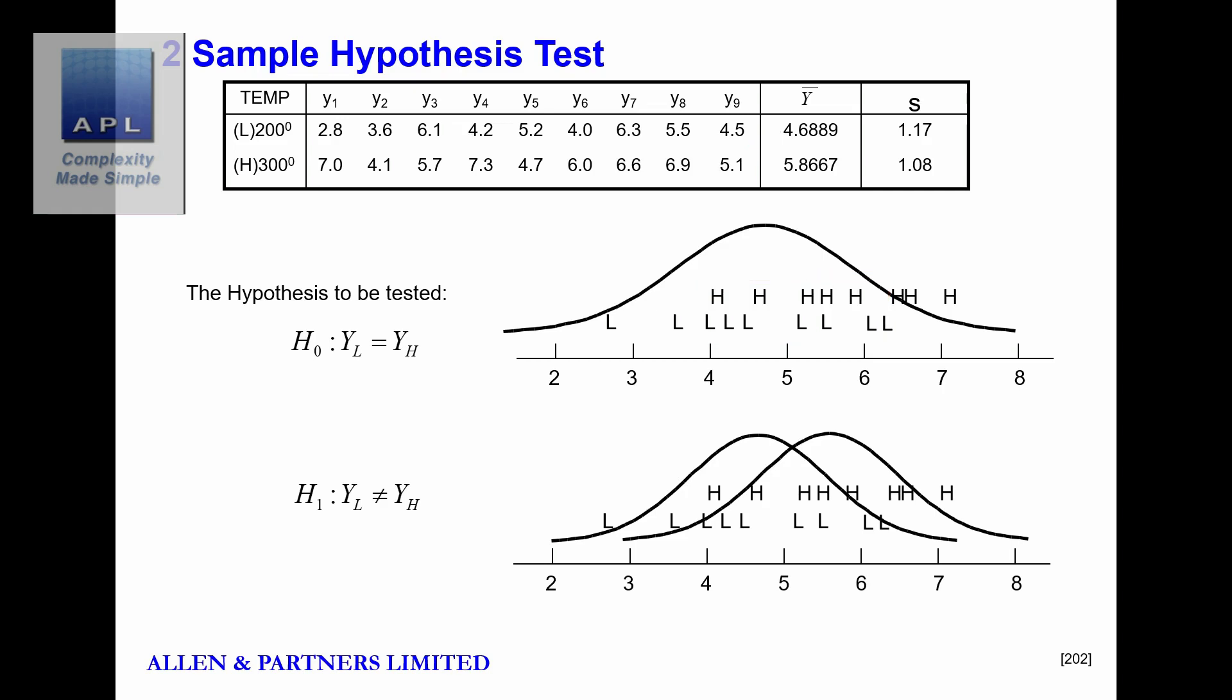But of course there's also the chance that it isn't luck. Maybe what we've done by changing the temperature, we've created two separate means, 4.6 and 5.8, and we've created a genuine shift in the process. Here what have we done? We've made a deliberate process change. And then the t-test is going to tell us whether the difference that we see is signal or luck, just noise. That's what the t-test does.